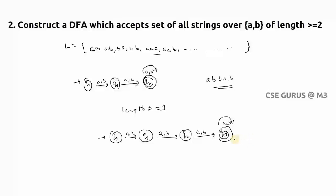Now let us verify it is a valid DFA. q0 on a — yes, q0 on b — yes, q1 on a — yes, q1 on b — yes, q2 on a — yes, q2 on b — yes. No need to include any dummy state here. It satisfies all the constraints of a DFA. We'll see the next question in the next video lecture. Thank you.